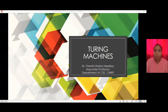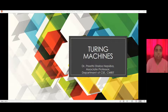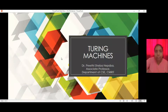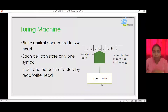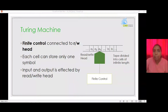The working of a Turing machine is explored in this video with the help of an example. The Turing machine was proposed by Alan Turing in 1936 and was intended to investigate the extent and limitations of what can be computed. A Turing machine comprises a finite control, an infinite tape divided into cells that can hold a symbol, and a read-write head that can move in two directions: left or right.